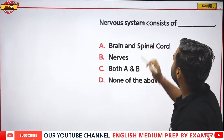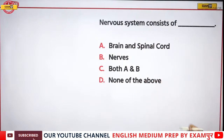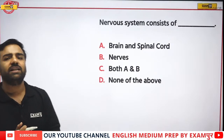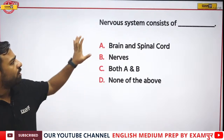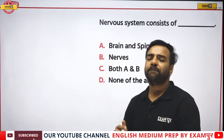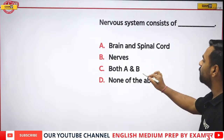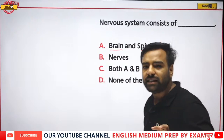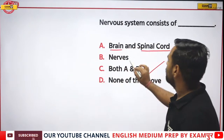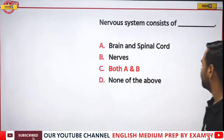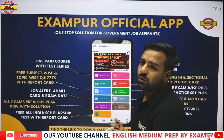Question: the nervous system consists of what? Option A: brain and spinal cord. Option B: nerves. Option C: both A and B. Option D: none of the above. The correct answer is C — both A and B — because nerves, brain, and spinal cord are all parts of the nervous system. Nikita is absolutely correct.